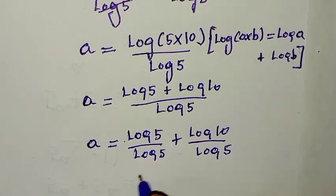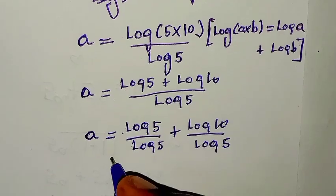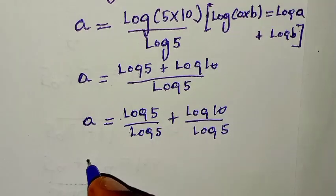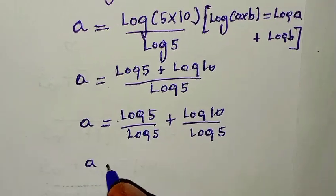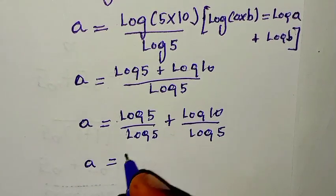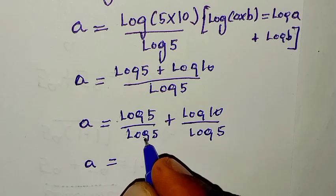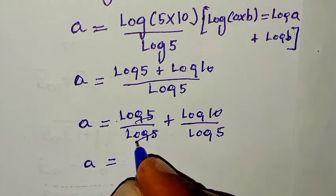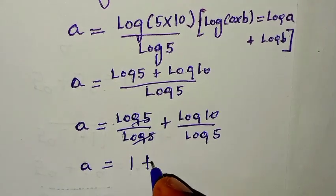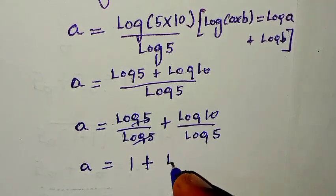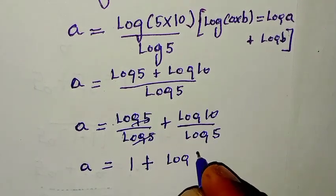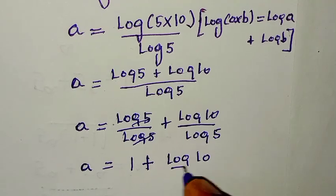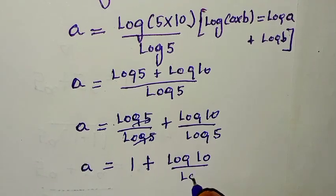Then in the next step, log of 5 will be divided into each part. So log of 5 over log of 5 plus log of 10 over log of 5. Then log of 5 divided by log of 5 is 1. So it will be 1 plus log of 10 over log of 5.